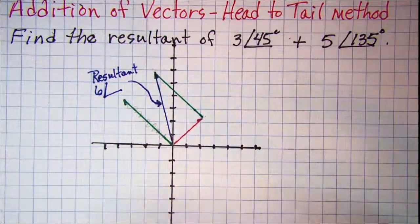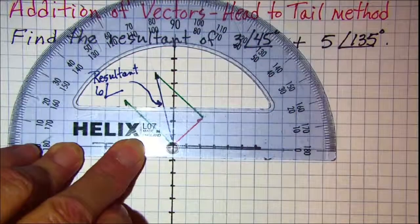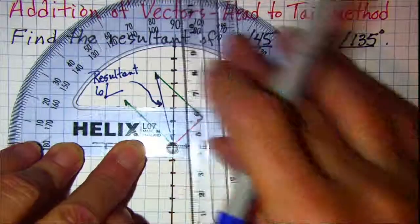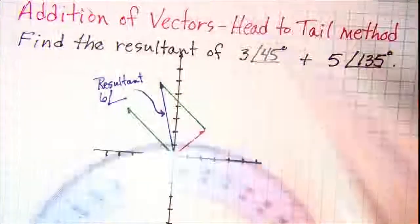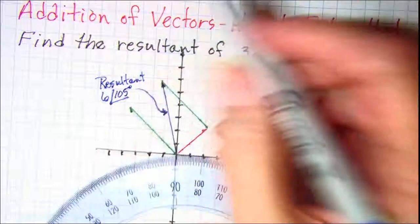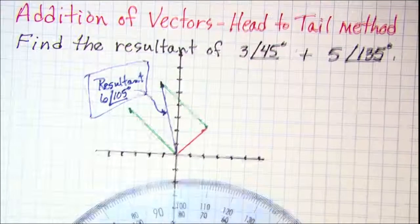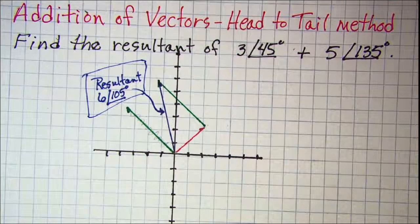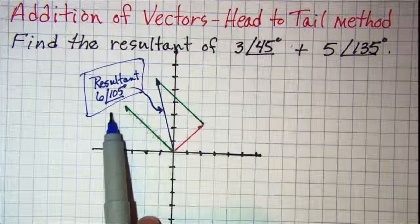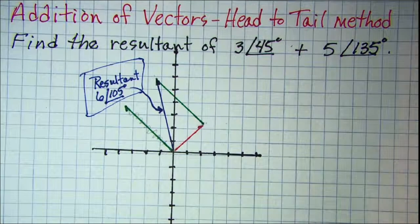And the angle on that is about 105, so an approximate resultant for those two would be 6 at 105. Now we can do the mathematics on this and get a more accurate answer.